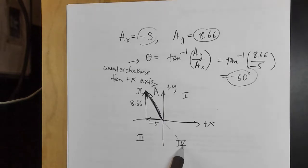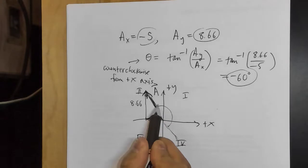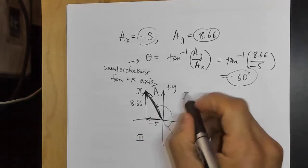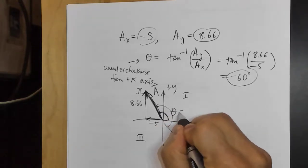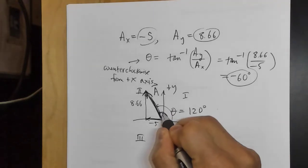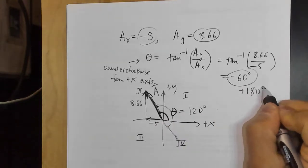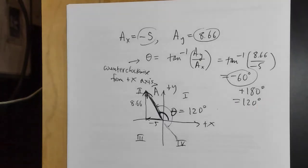The angle here is actually 180 degrees plus negative 60. So this angle theta should be 120 degrees. The way to get that is just add 180 to the calculator result.